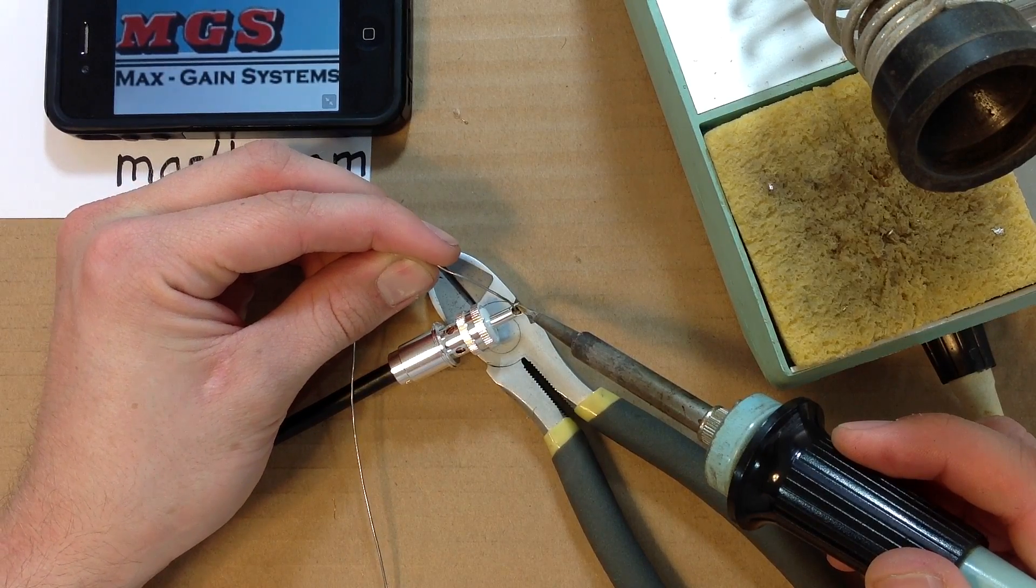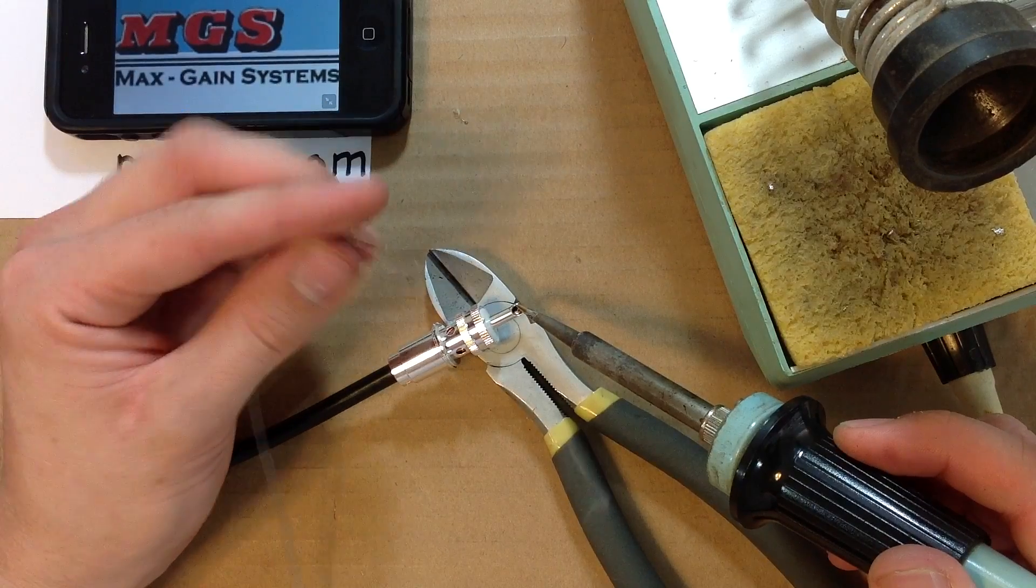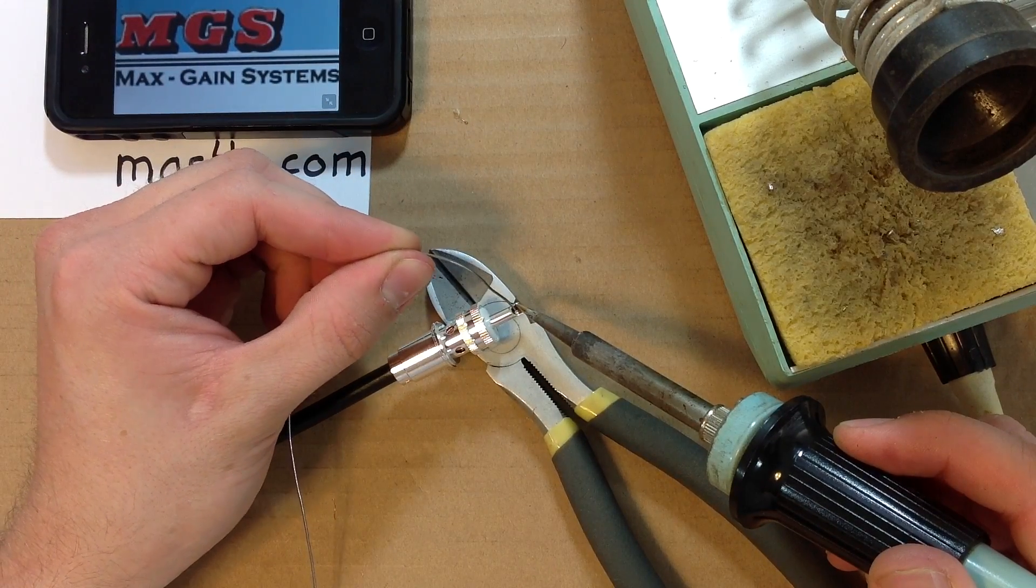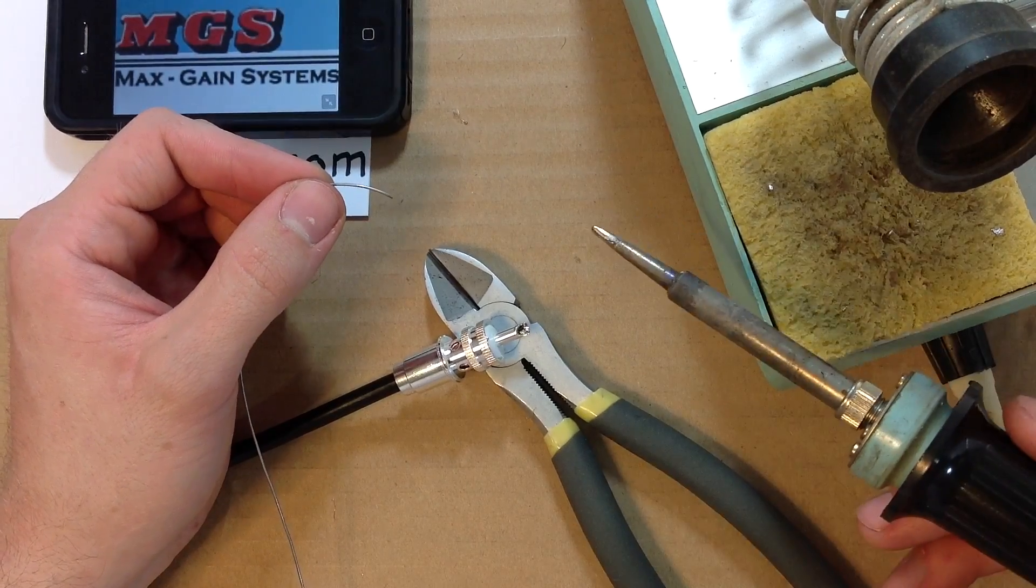The center pin of the Max Gain Systems PL259 can withstand the heat of any iron and will not melt like others. It just needs a little bit of solder to seal it and make a good connection. Now wipe and re-tin your soldering iron.